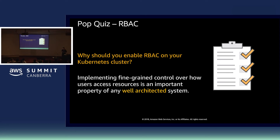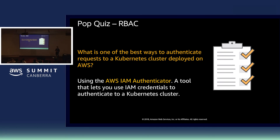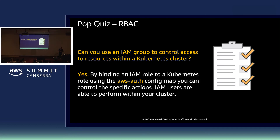Why should you enable RBAC on your Kubernetes clusters? Because we all want fine-grained access control and principles of least privilege. We don't necessarily want to give everyone access to do all the things, and it's a property of a well-architected solution. What is one of the best ways to authenticate requests to Kubernetes clusters deployed on AWS? The AWS IAM Authenticator — an open source tool, now part of the Kubernetes project. It works with clusters deployed on AWS, not necessarily just EKS. And yes, you can use IAM roles to control access to resources within a Kubernetes cluster, combining IAM roles with Kubernetes roles.